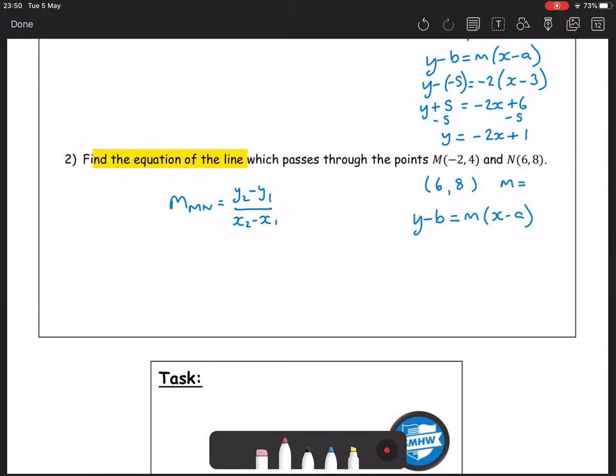In this case, we have our x and y of our first and our x and y of our second point. 8, 8 subtract 4, 6 subtract minus 2. 4 over 8 gives us a gradient of a half. That gives us the point and the gradient required to complete our equation.